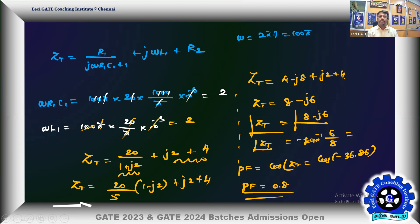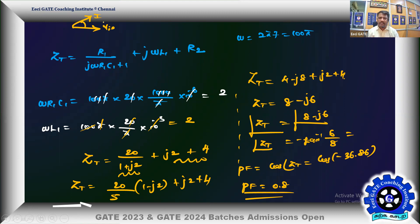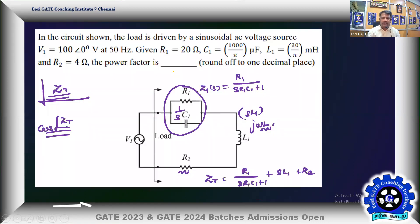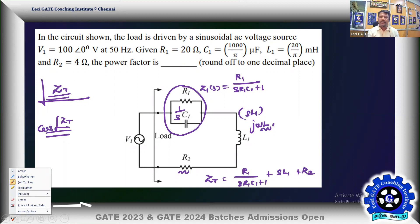You can find the power factor directly from the impedance angle without computing current separately. In this circuit, current leads voltage because it is an RC load — it is a leading power factor of 0.8. The question asks for power factor up to one decimal place, so the answer is exactly 0.8.